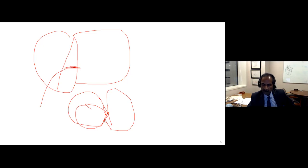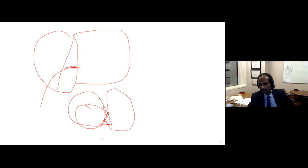A useful tip when junctionals are re-inducing AVNRT during ablation: downshift to a lower line, away from automaticity but still close to the slow pathway. The lower line may give you PACs from the CS myocardium but fewer junctionals. Going back to your usual site afterward, you may find the tachycardia is no longer inducible or much harder to induce — so while completing the slow pathway line you've also been doing a perfect EP study. You then come back to the mid-CS level to complete the line.